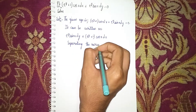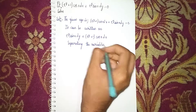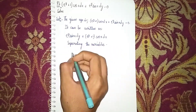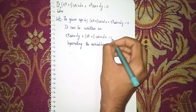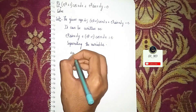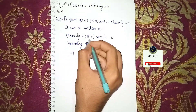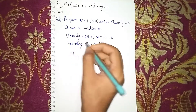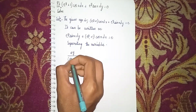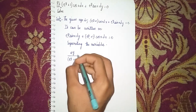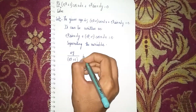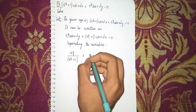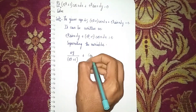Separating the variables — here e^y is present, so we place e^y in the denominator on one side, giving us e^y / (e^(y+1)) on the dy side, and cos x on the dx side.